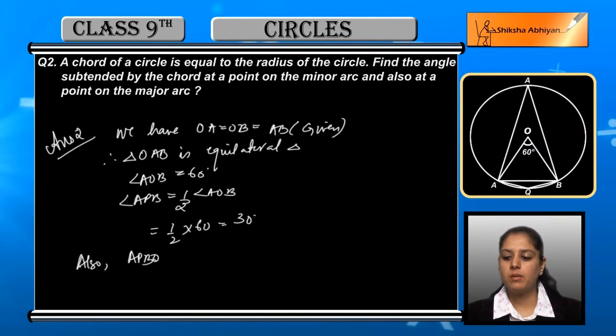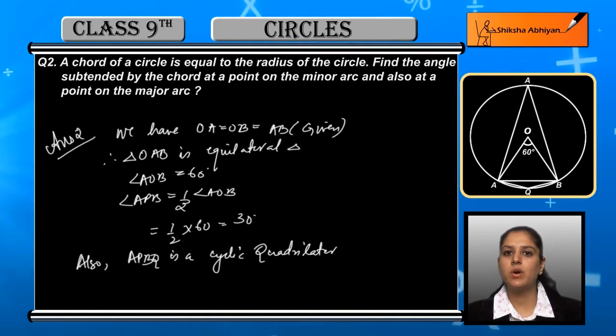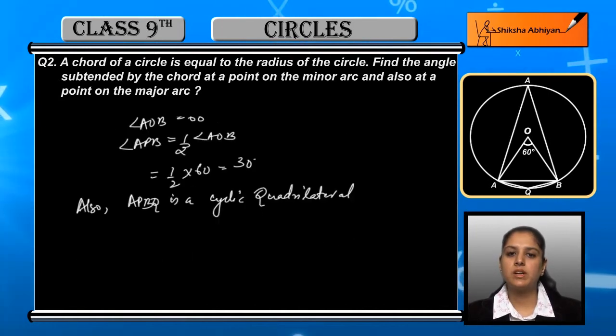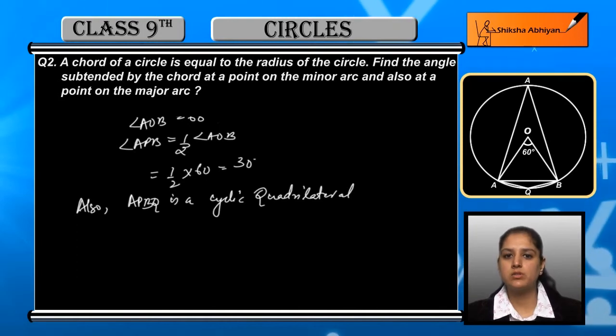That means half of 60 is 30 degrees. Now if we look at this clearly in our figure, a cyclic quadrilateral is forming. Cyclic quadrilateral means a quadrilateral inscribed in a circle that touches the corners. So APBQ is a cyclic quadrilateral.